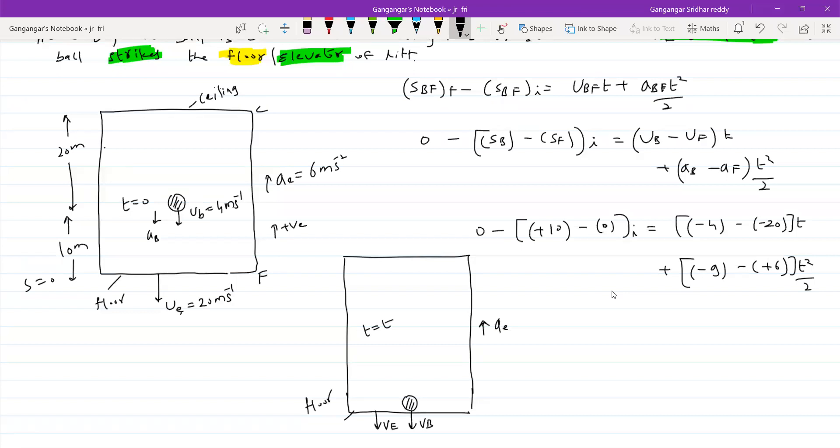Like if you want to take the direction as negative, so this will become minus 10. So this will be plus 20, 20 minus 4, 16 T. 10 minus 10, 16 minus 8, T squared.